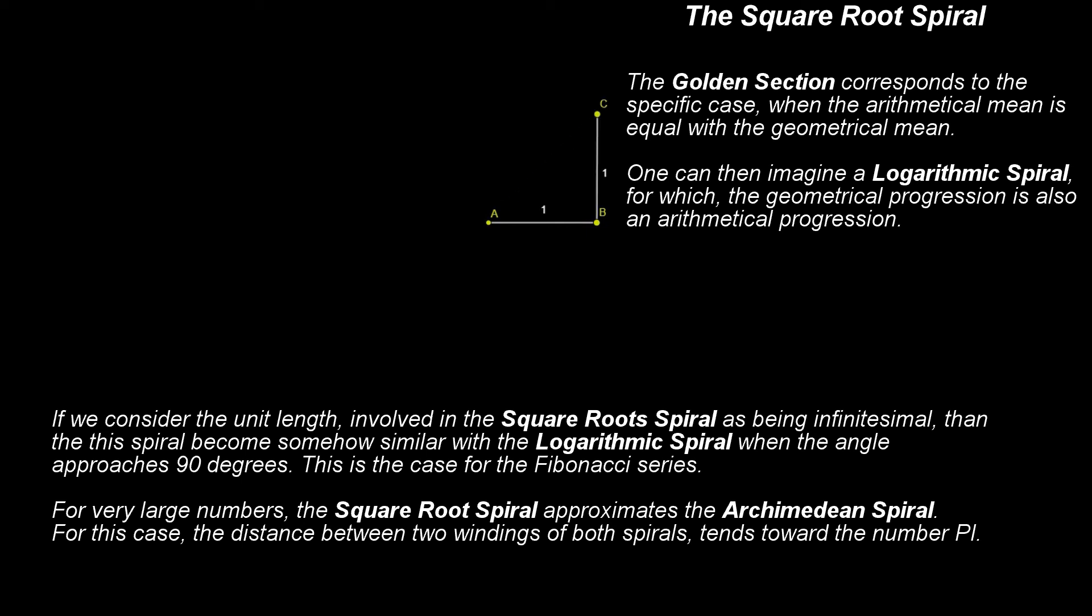As we have seen in a previous video, the golden section corresponds to the specific case when the arithmetical mean is equal with the geometrical mean. One can then imagine a logarithmic spiral for which the geometrical progression is also an arithmetical progression. This is already the case for the Fibonacci series.